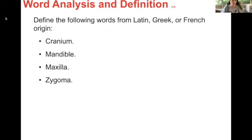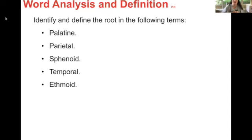Define the following words from Latin, Greek, or French origin — straight from your book or Google. Cranium is Greek for skull. Mandible is Latin for jaw. Maxilla is also Latin for jawbone — those two go together. And zygoma is French for yolk — I had no idea that was French; I'm used to everything being Latin and Greek. Identify and define the root in the following terms. The first one, palatine, the root is P-A-L-A-T because -ine is a suffix. This is a bone that forms the hard palate and parts of the nose and orbit.